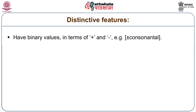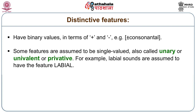Number one, distinctive features have by and large binary values, which means they are specified in terms of plus and minus — for example, plus voice, minus voice, plus consonant, minus consonant, etc. Some features are assumed to be single-valued, meaning they don't have a plus-minus value but are just present or absent. For example, labial: a sound is either labial or not labial. It is not necessary to say that la is plus or minus labial — la is simply not labial. There are features like this, which are stated in terms of monovalent or single-valued features.